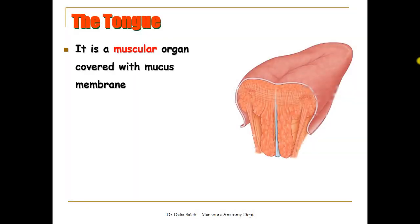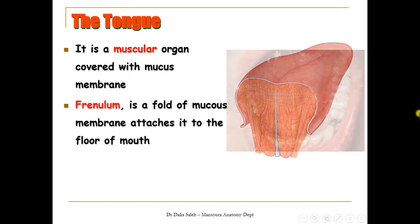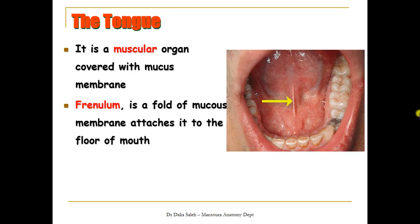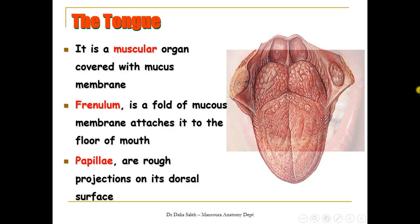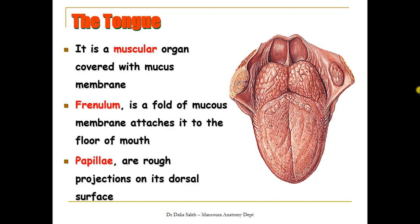The tongue is a muscular organ covered by mucous membrane. The frenulum is a fold of mucous membrane that attaches the undersurface of the tongue to the floor of the mouth. On the dorsal surface of the tongue — the part that faces the hard palate — it is rough, filled with projections called papillae. Some of them contain the taste receptors, or taste buds.